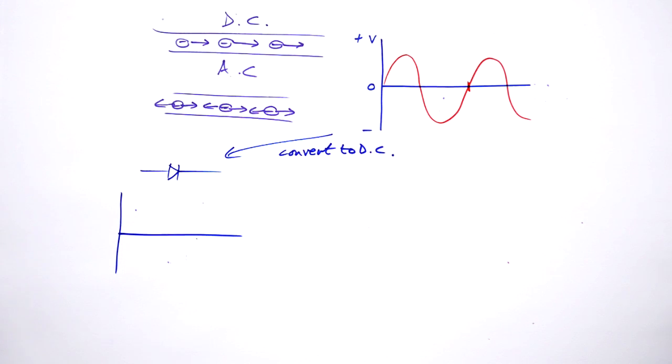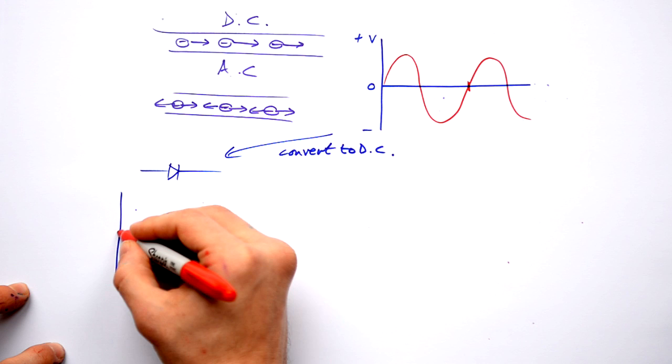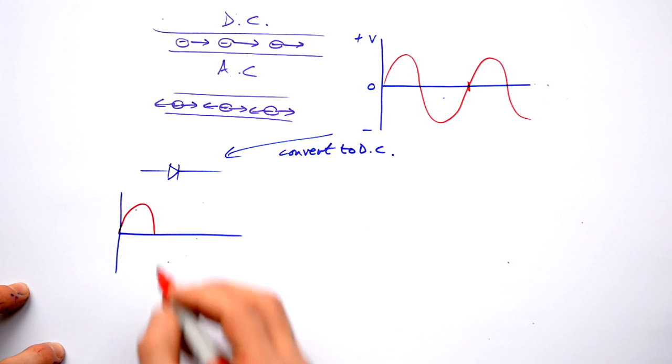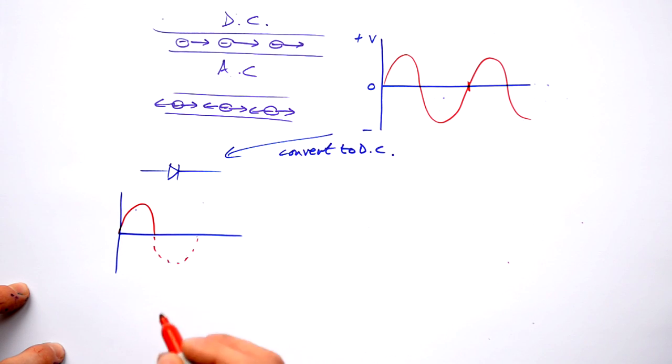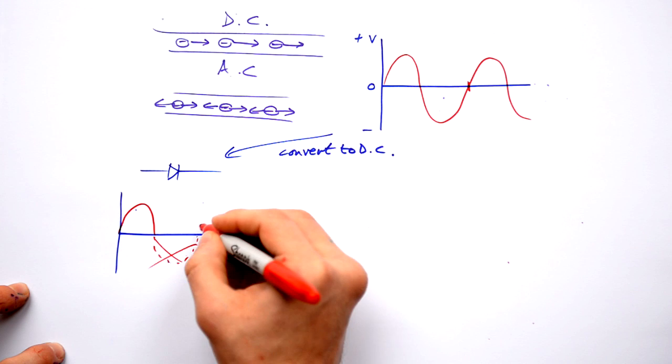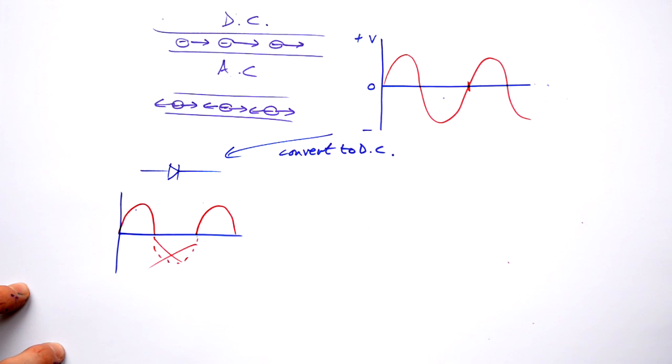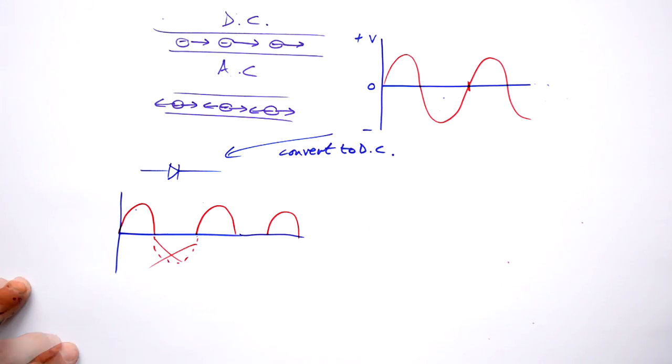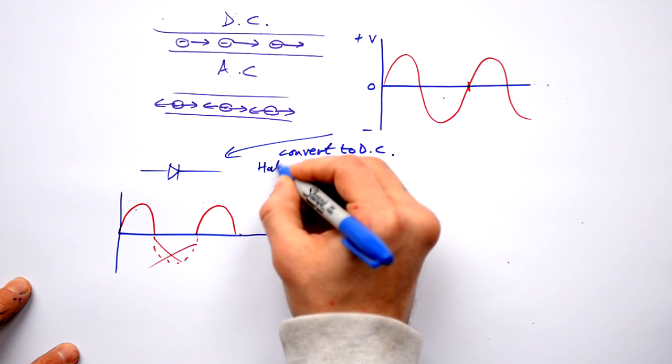So when we pass our AC through this, we actually get the electrons flowing one way, but when they go the other way they're actually stopped. So we actually just get this lumpy DC. Problem with that is we get half of the energy lost in the diode, so that's not very useful, but it is easy. This is called half wave rectification.